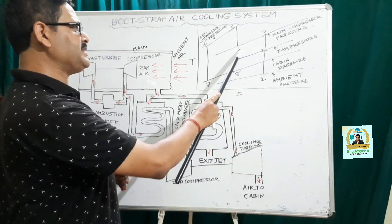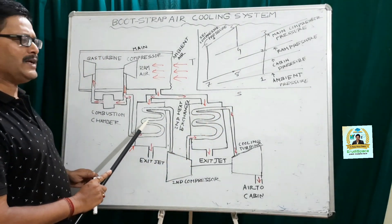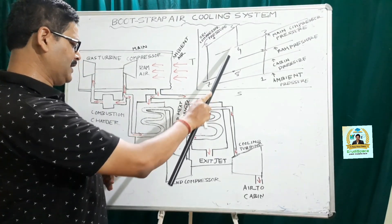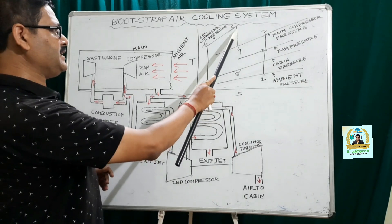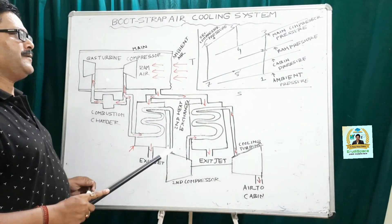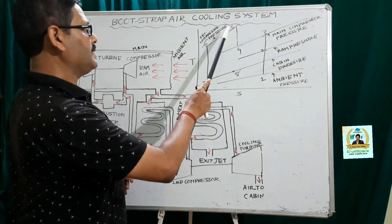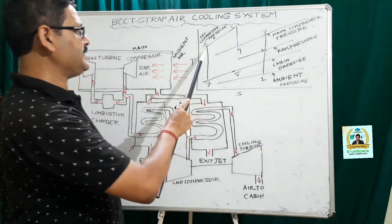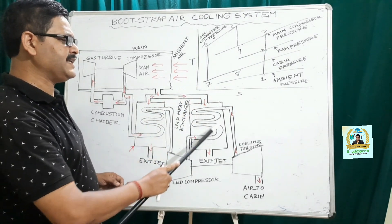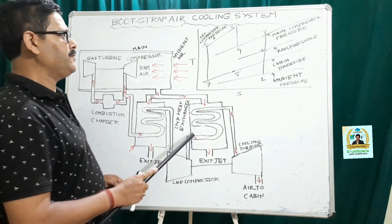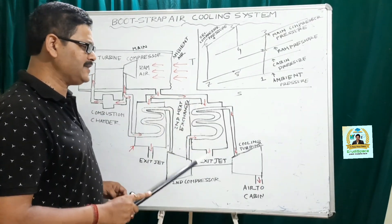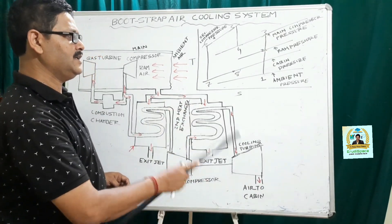Process 3-4 represents the cooling that is taking place in the first heat exchanger. Process 4-5 represents the compression that is taking place in the second compressor. Process 5-6 represents the cooling in the second heat exchanger. Process 6-7 represents the expansion that is taking place in the cooling turbine.